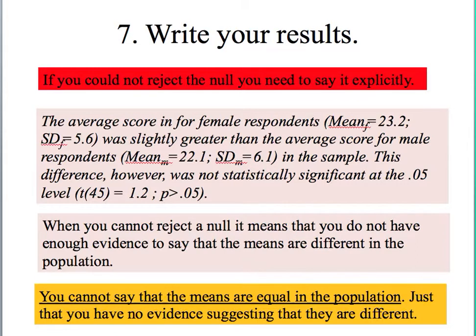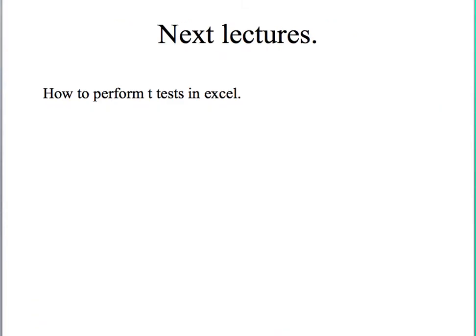When you reject, you have evidence to say that the means are different in the population. But when you don't reject, you don't have evidence to say anything. In the next videos, I'm going to show you how to do t-tests using Excel. After you go through those lectures, you should probably come back to this one and review — it will hopefully make more sense. Thanks for watching!